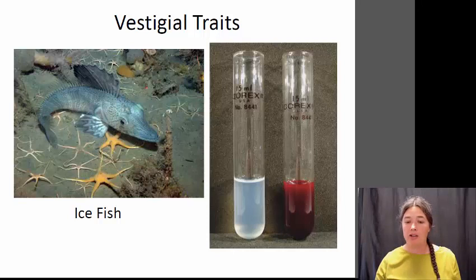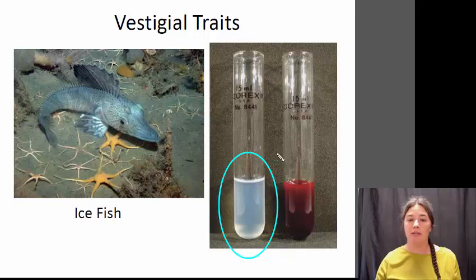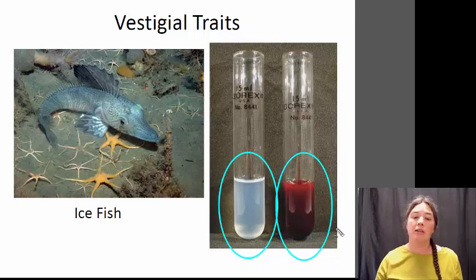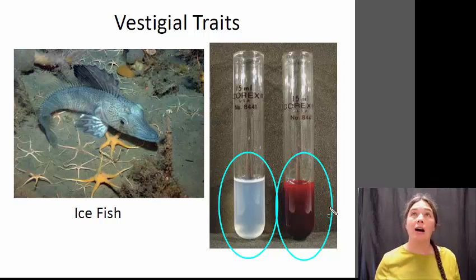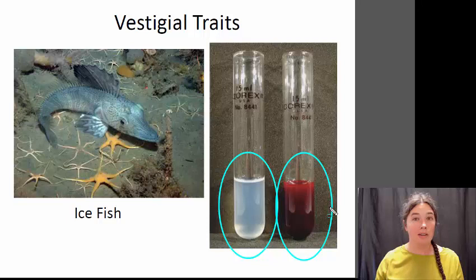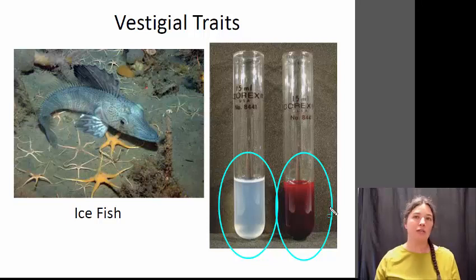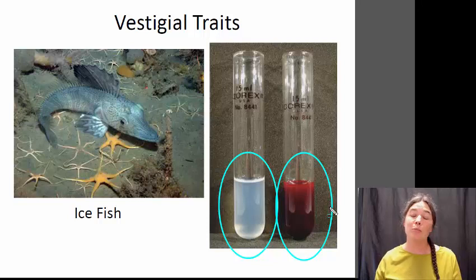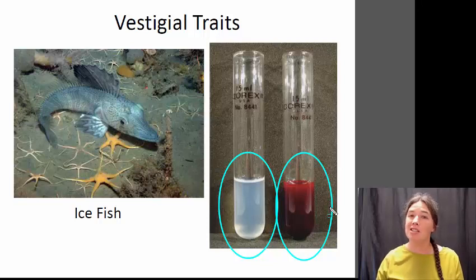Most other vertebrates require more oxygen, so they need a way to concentrate and transport oxygen around the body. The thing we use for that is called hemoglobin — a molecule within our red blood cells that binds oxygen and transports it throughout the body so we can efficiently deliver oxygen to our tissues. Because the ice fish has such low oxygen requirements and its environment is so high in oxygen, it is actually able to survive without hemoglobin. This image is showing ice fish blood versus normal fish blood. The thing that gives blood its red color is hemoglobin. The ice fish has lost a functional gene for hemoglobin — it no longer has a gene that produces hemoglobin within its cells. However, if you look at the genetics of an ice fish, you will find the non-functional hemoglobin gene still in its genome, with mutations preventing it from producing functional hemoglobin. That gene has now become a vestigial trait.